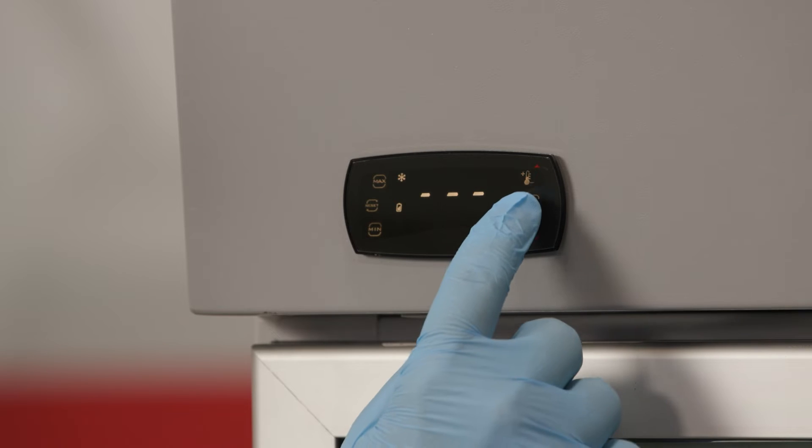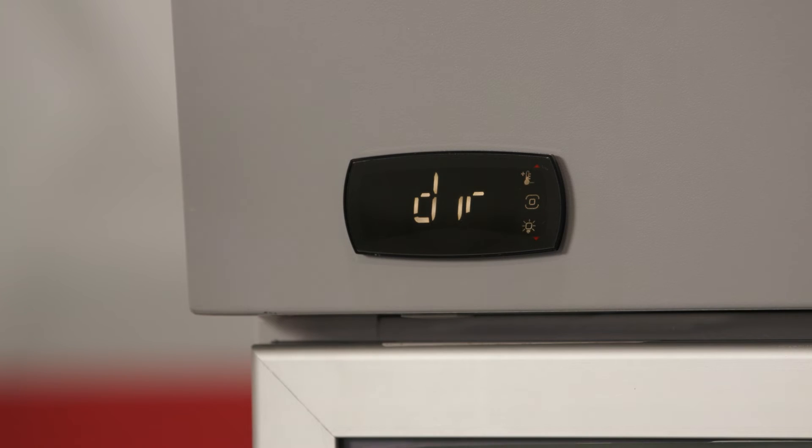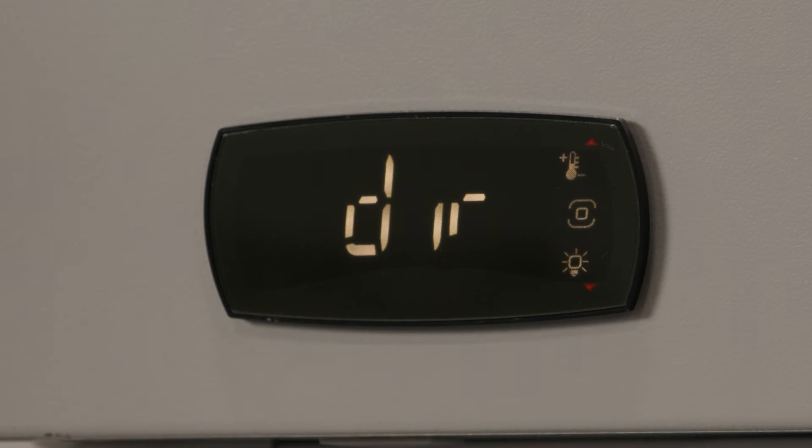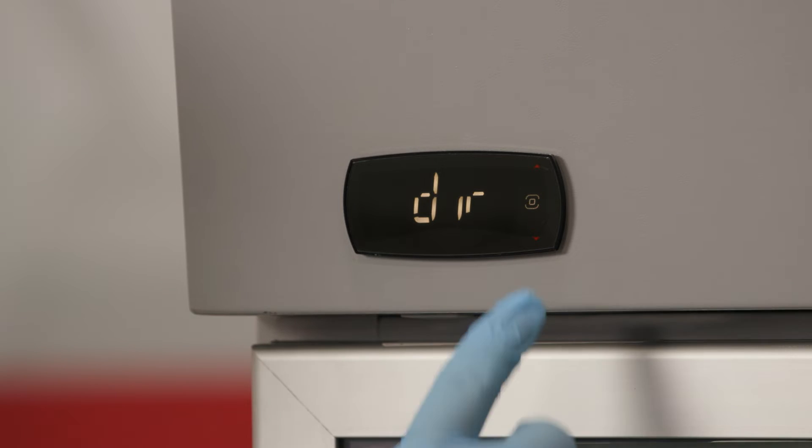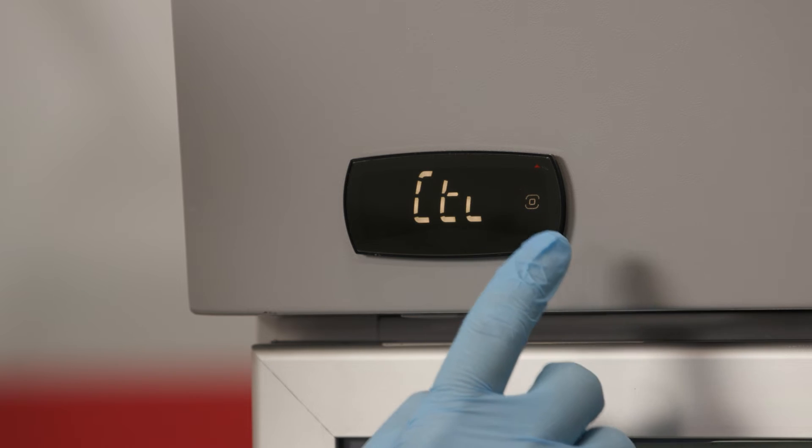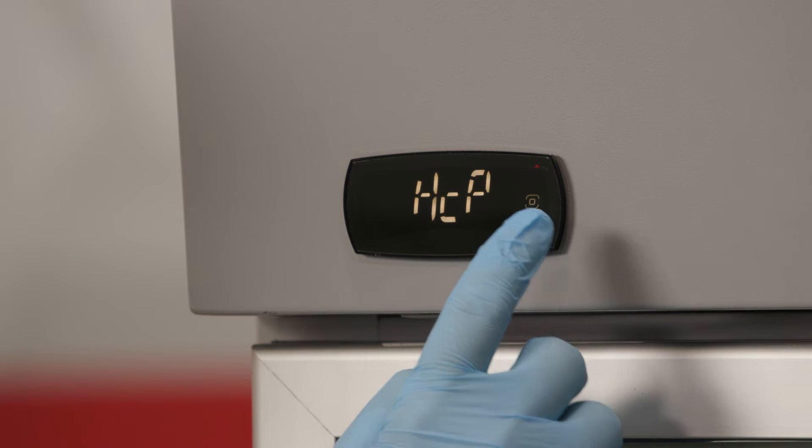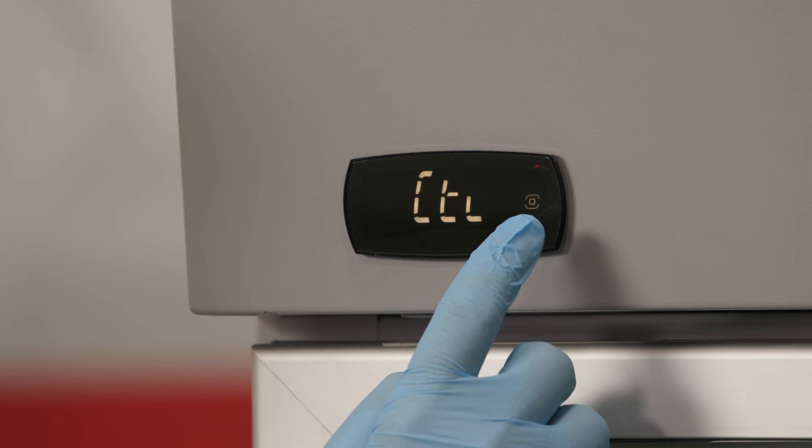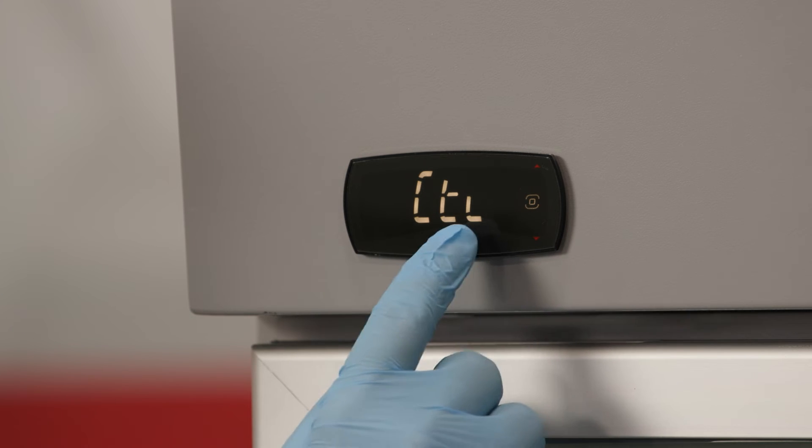Press the program button once more to enter programming mode. The up and down arrow buttons will flash and the DIR or direct functions will be displayed. Use the up and down arrows to scroll through the programming menu until you find CTL or control parameters. Press the program button to select CTL and view the next menu.